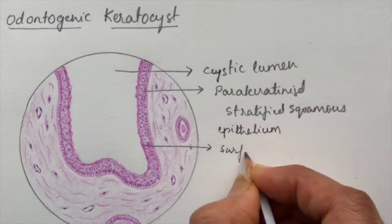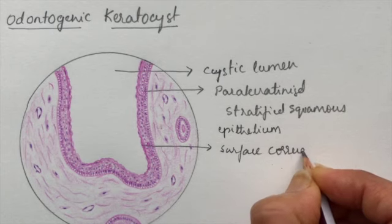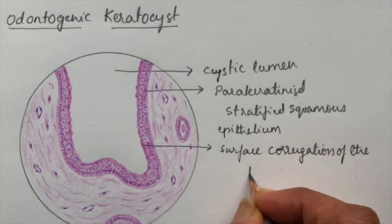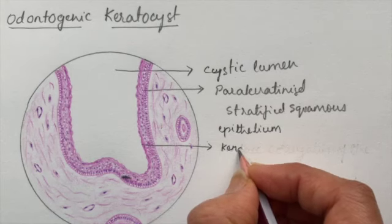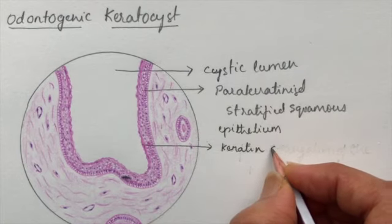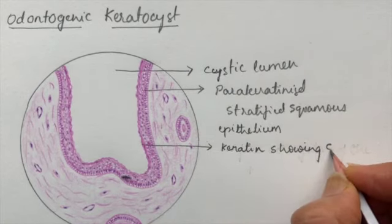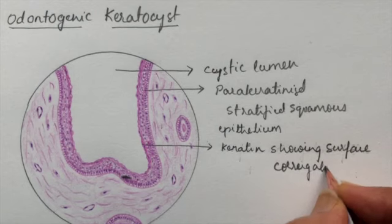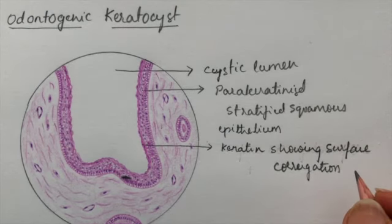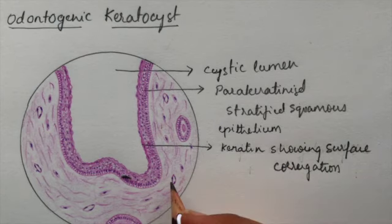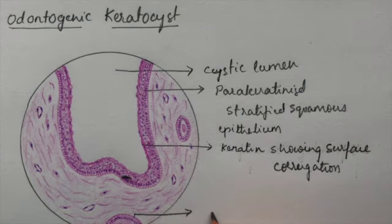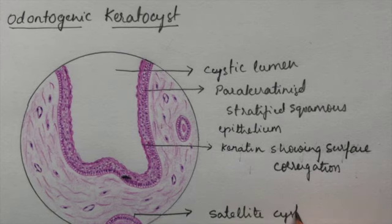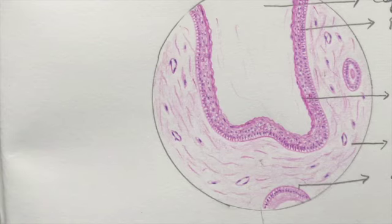Surface corrugation of the keratin, showing surface corrugation, or you can write keratin surface showing corrugation. These are the daughter cysts or the satellite cysts.